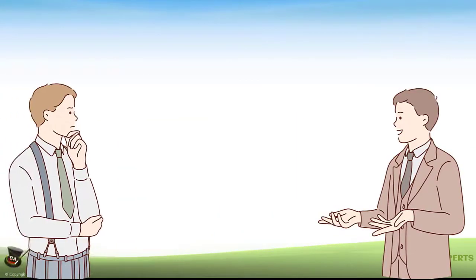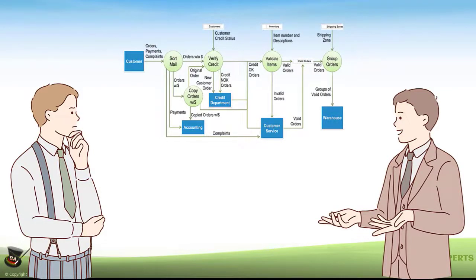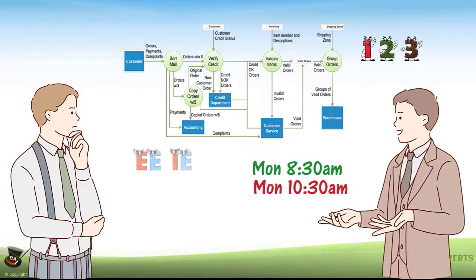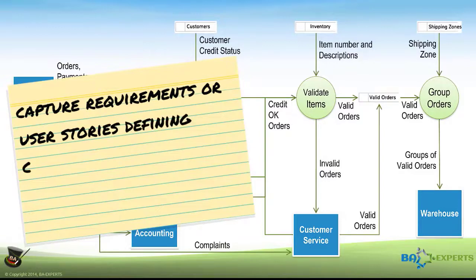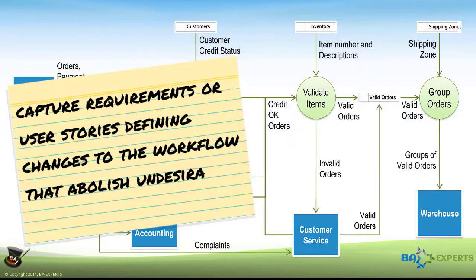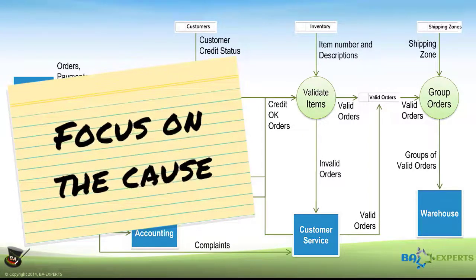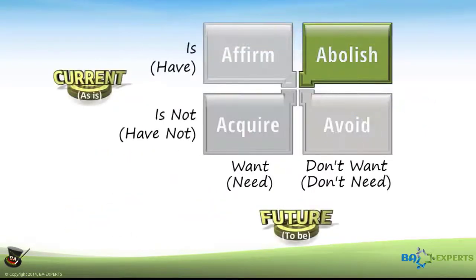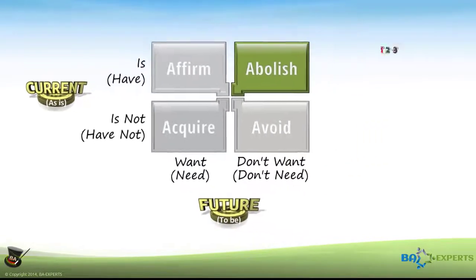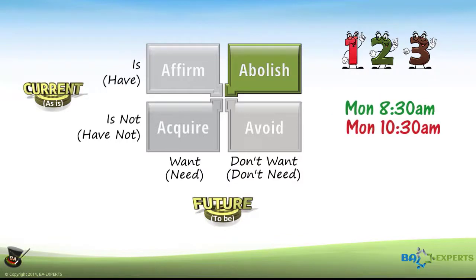Once you and your domain experts can visualize the workflow and issues — problems, timing anomalies, or internal-external exceptions — the next step is to capture requirements or user stories defining changes to the workflow that abolish undesirable situations. The easiest way to eliminate issues is to focus on the cause. If the situation is complex because there are multiple places it could be caused, you may need to do root cause analysis. Once you have narrowed the causes down as much as possible, here is a logical approach for deciding how to change the workflow to eliminate each undesirable situation, whether it's a problem, a timing anomaly, or ineffective error and exception handling.